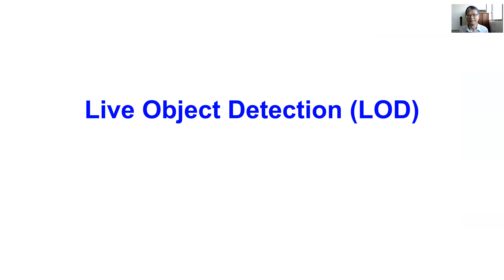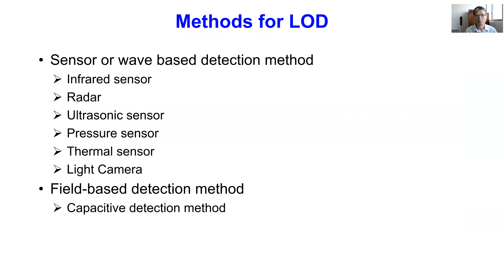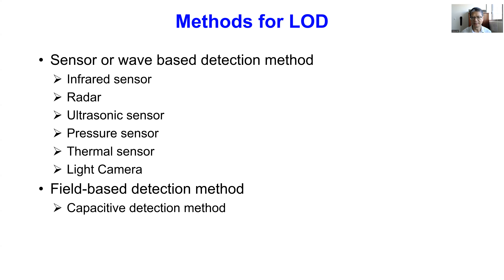Let's dive into living object detection. We can mostly use two different categories: sensor-based or wave-based detection, or field-based detection. Sensor-based methods include infrared sensor, radar, ultrasound pressure sensor, thermal sensor, and light camera — all of which can be used to detect living objects. Field-based detection looks at capacitance changes in the system, because when there is an animal, the media changes the capacitance.